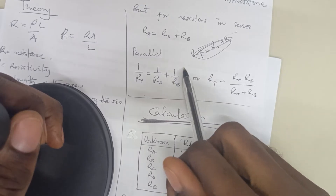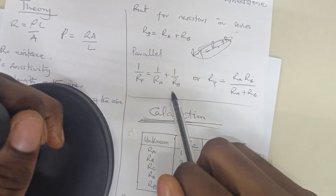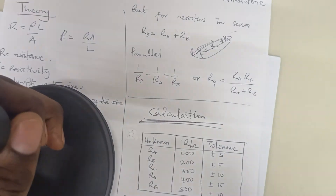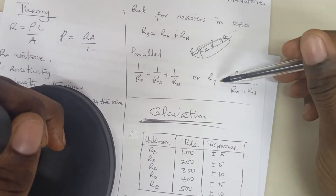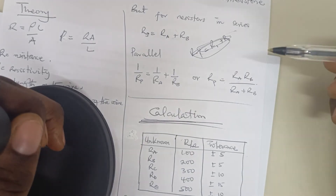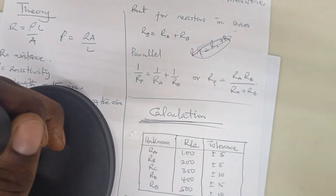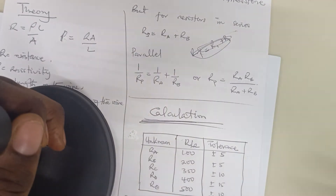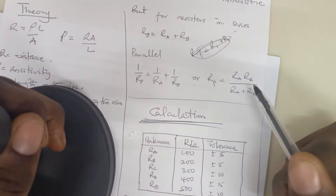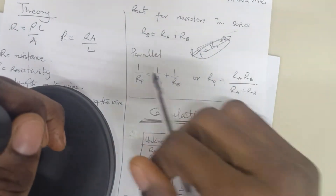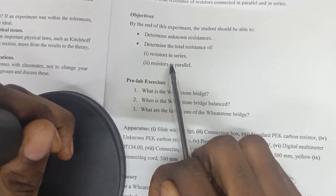But for resistance in parallel, 1 over the total resistance equals 1 over the first resistance plus 1 over the second resistance. When you find the LCM, you arrive at the expression: the total resistance for resistors in parallel is their product over their sum. So this is what we use to find the resistors in series and in parallel.